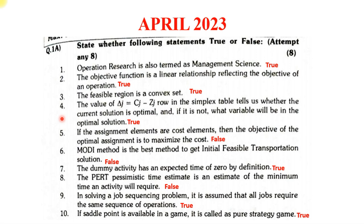First: 'Operations Research is also termed as Management Science' — that is True. 'The objective function is a linear relationship reflecting the objective of an operation' — True. 'The feasible region is a convex set' — True. 'The value of delta j equals cj minus zj row in the simplex table tells us whether the current solution is optimal and if not, what variable will enter the optimal solution' — True. 'If the assignment elements are cost elements, then the objective of the optimal assignment is to maximize the cost' — False, because cost is always minimized.